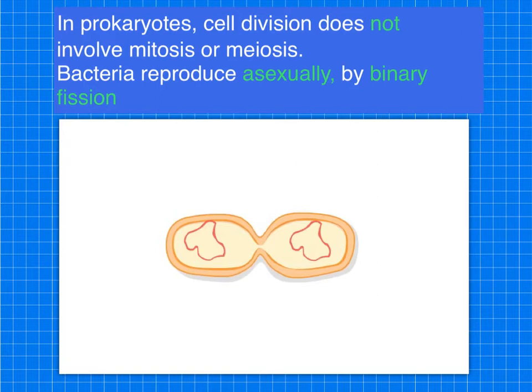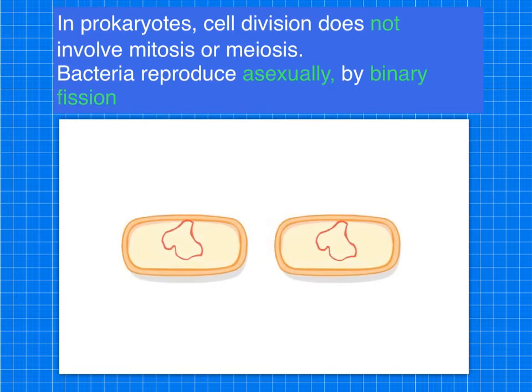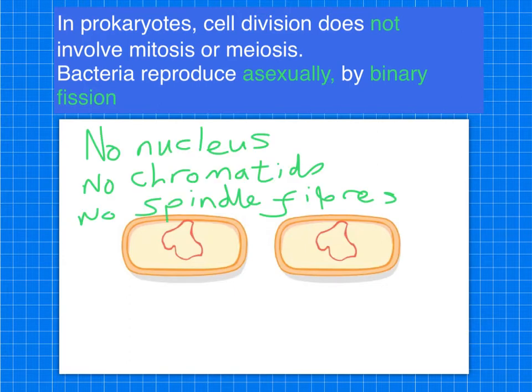You can then see them starting to separate out and eventually split. The single bacteria cell is divided into what we call two daughter cells, and they each have the same identical copies of DNA. This process is pretty fast — some bacteria can double every 10 minutes under optimum conditions. It does look a bit like mitosis but it's not, for several reasons: there's no nucleus, no chromatids, and no spindle fibers.